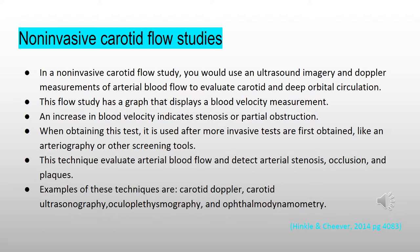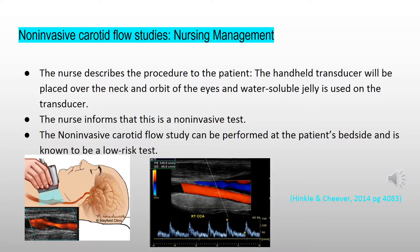In a non-invasive carotid flow study, ultrasound imagery and Doppler measurements of arterial blood flow are used to evaluate carotid and deep orbital circulation. This flow study has a graph that displays a blood velocity measurement. An increase in blood velocity indicates stenosis or partial obstruction. This technique is used after more invasive tests such as arteriography or other screening tools are first obtained. It evaluates arterial blood flow and detects arterial stenosis and occlusion. For nursing management, the nurse describes the procedure to the patient, explaining that a handheld transducer will be placed over the neck and orbit of the eyes and that water-soluble jelly is used on the transducer. This is a non-invasive, low-risk test that can be performed at the patient's bedside.